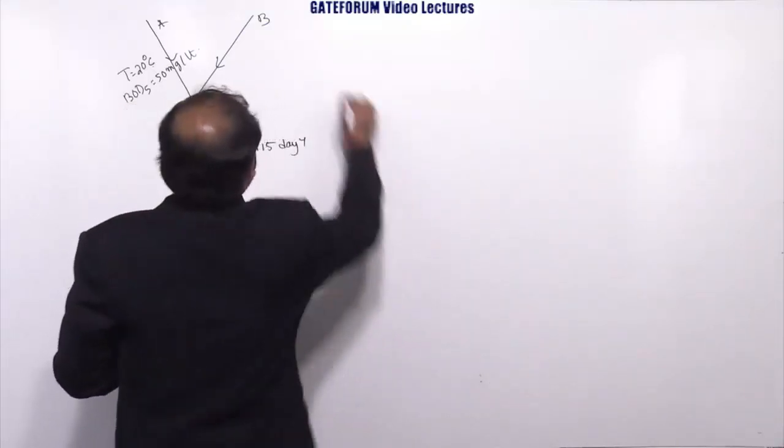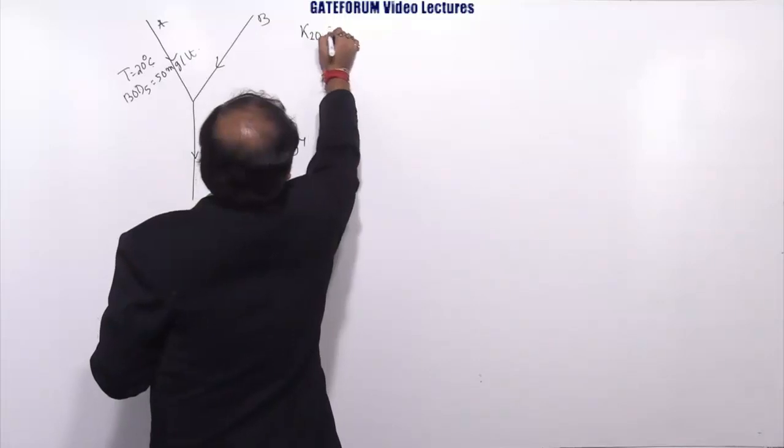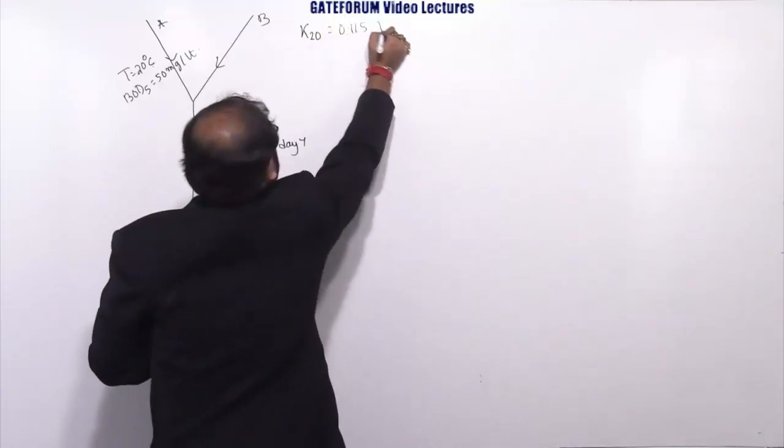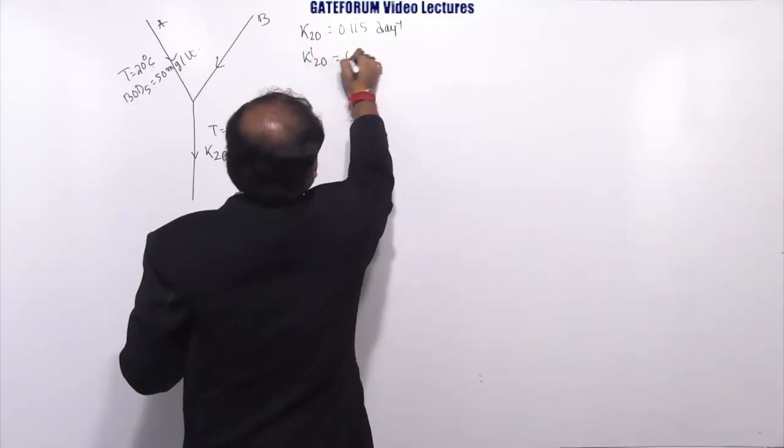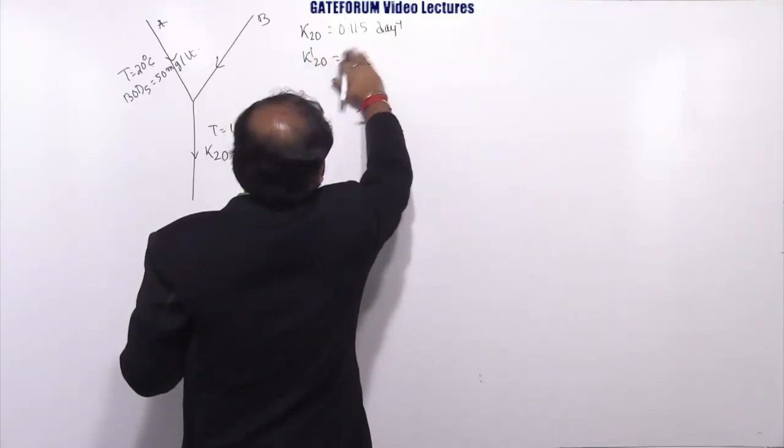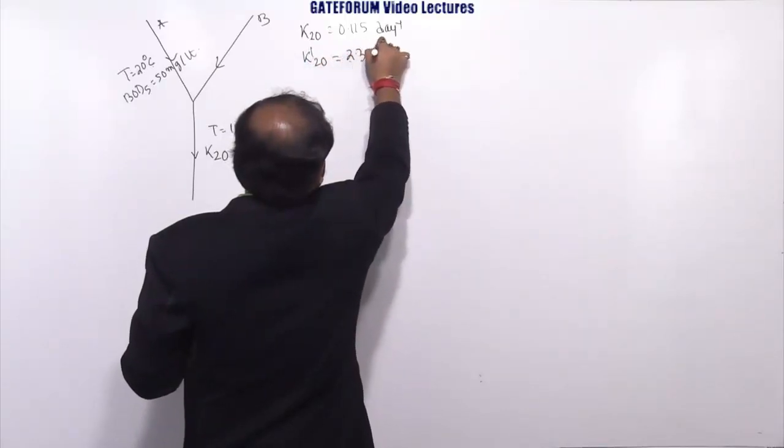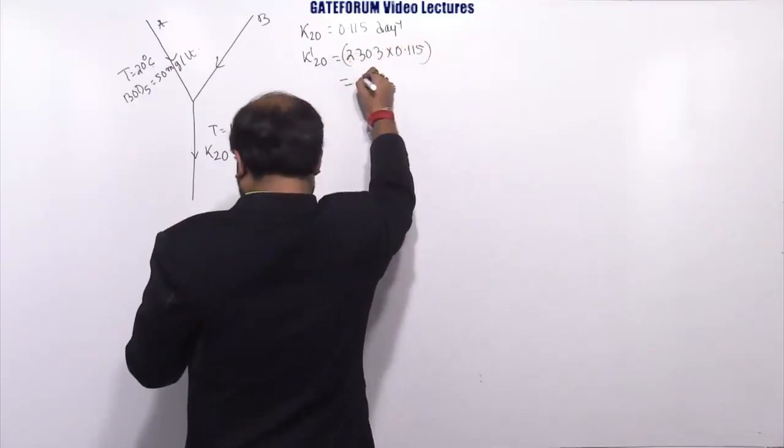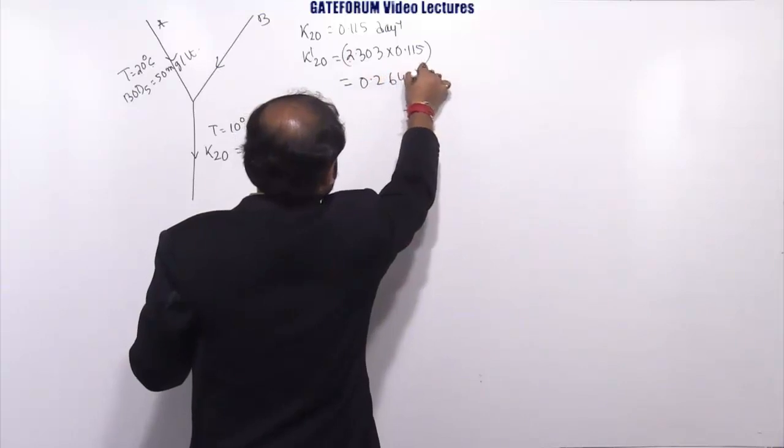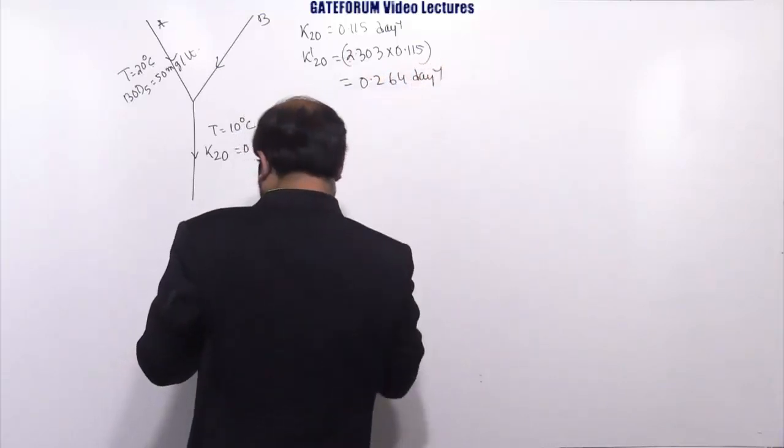First job is to find out K20 is given as 0.115 day inverse. K'20 will be 2.303 into 0.115 that equals 0.264 day inverse.